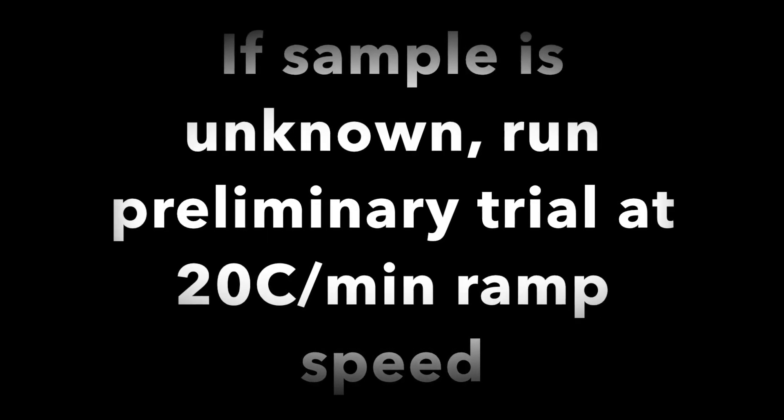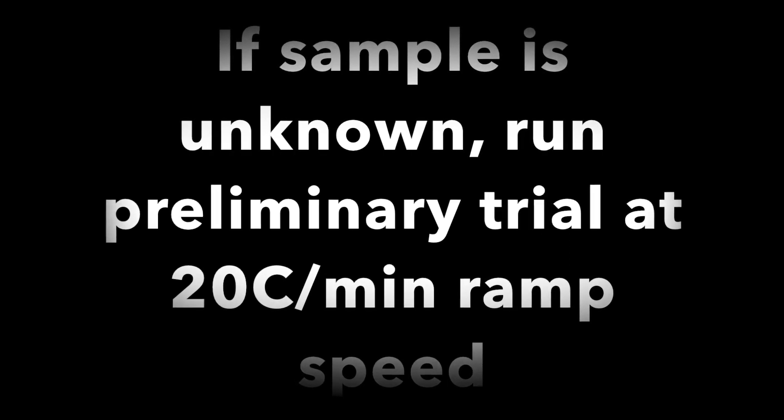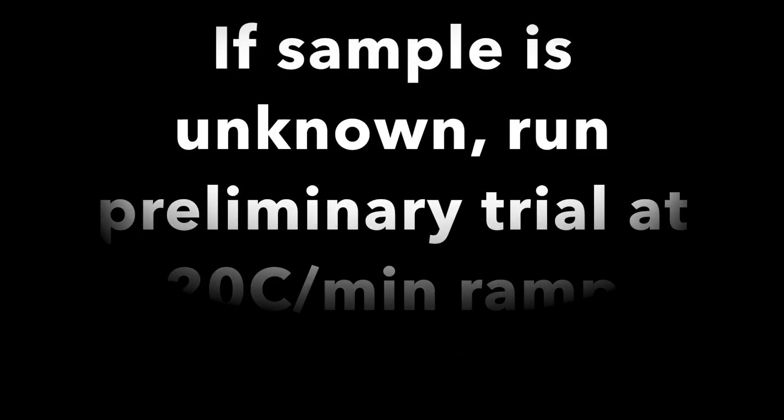If the sample is unknown, run a quick trial run using a 20 degrees per minute ramp rate. Then use the values obtained from this run to get a more precise measurement from a second run at a smaller ramp rate. We hope this has given you the necessary information on melting point determination. Have fun in the lab!